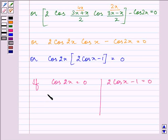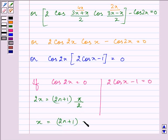We have cos 2x is equal to 0 that means 2x is equal to 2n plus 1 multiplied by pi by 2 which gives us that x is equal to 2n plus 1, and the 2 will be in the denominator, hence pi by 4.